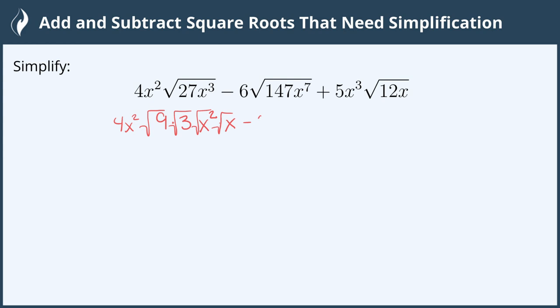Now let's break apart the second one. We still have the 6 out front. 147 is 49 times 3 so let's break that into square roots of 49 times the square root of 3.